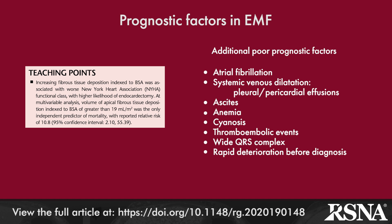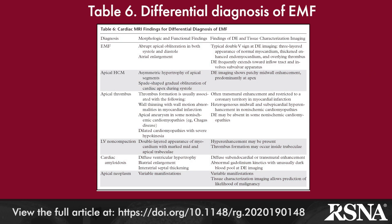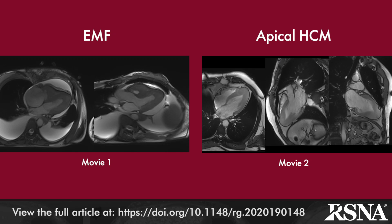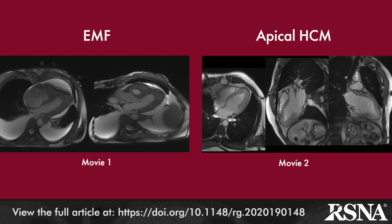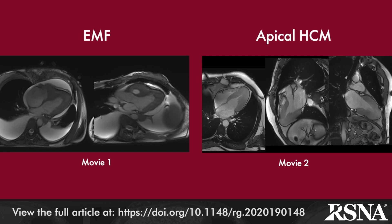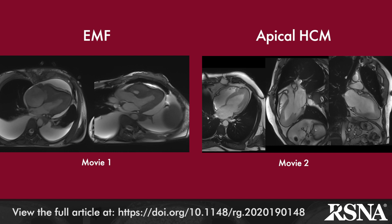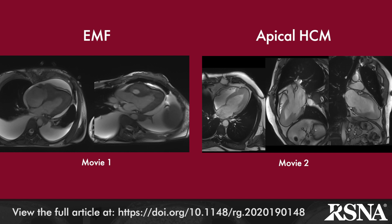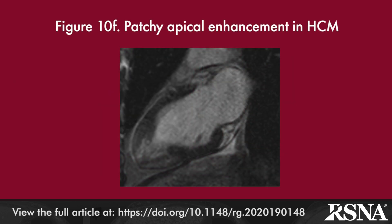The differential diagnosis of EMF includes the entities summarized in Table 6. Apical hypertrophic cardiomyopathy, or Yamaguchi disease, may be the most difficult entity to distinguish from EMF. Important distinguishing features include: 1) the apical obliteration seen in EMF is present in both systole and diastole, whereas in hypertrophic cardiomyopathy it appears predominantly in systole; 2) obliteration of the apical cavity is abrupt in EMF and more gradual in hypertrophic cardiomyopathy; and 3) delayed enhancement in hypertrophic cardiomyopathy is more mid-wall and patchy, compared to the pattern of uniform sub-endocardial enhancement seen in EMF.